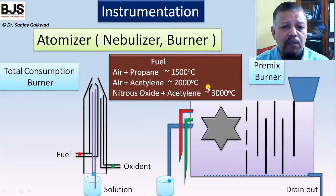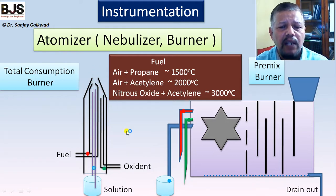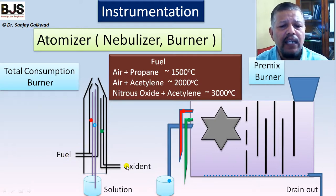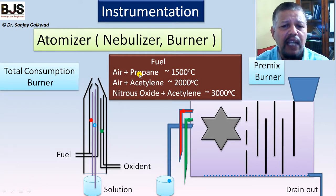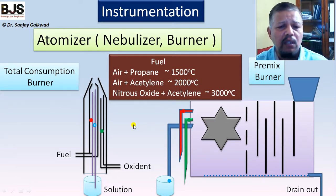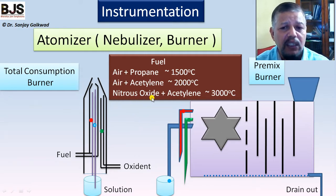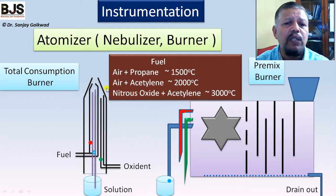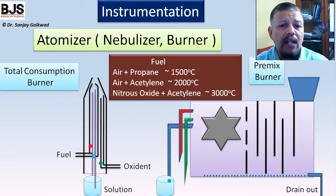Two types of burners are used: the total consumption burner and the premix burner. In the total consumption burner, the whole solution is transferred into the burner, and the fuel-oxidant ratio is maintained to achieve the required temperature. With air and LPG (propane), we reach up to 1500°C; with air and acetylene, 2000–2500°C; and with nitrous oxide as oxidant and acetylene as fuel, we can reach 3000°C, at which level metal ions transfer to atomic level and absorb radiation.